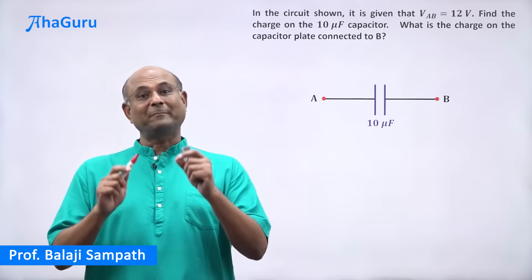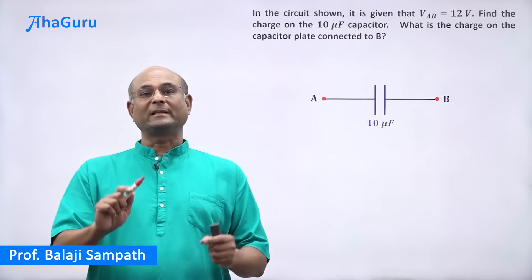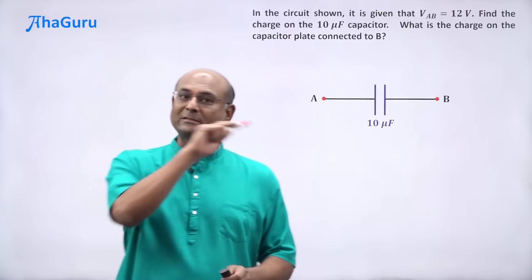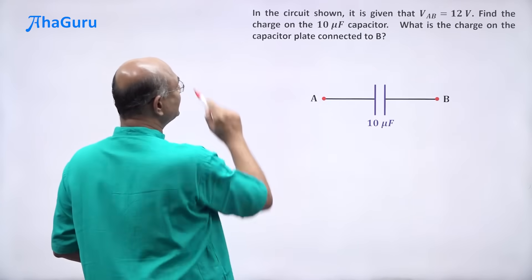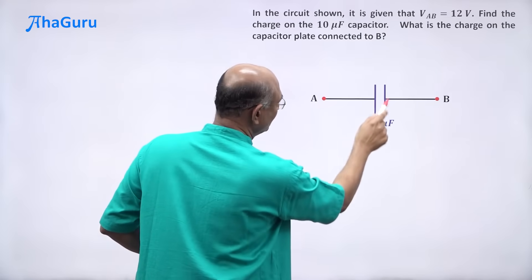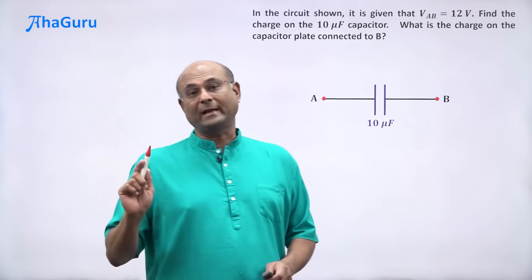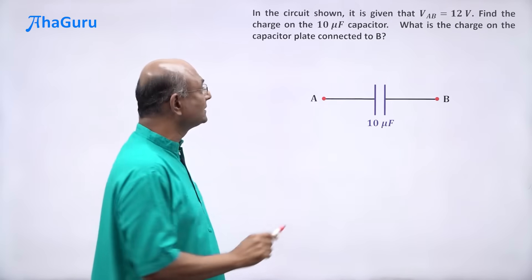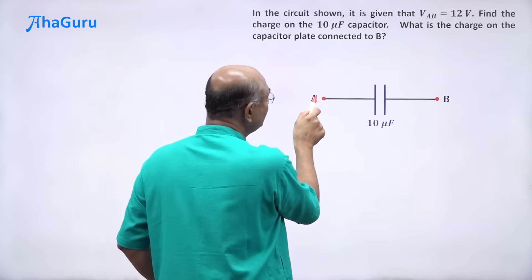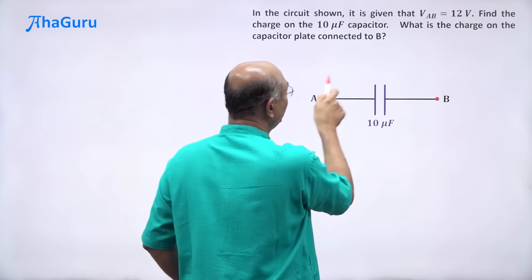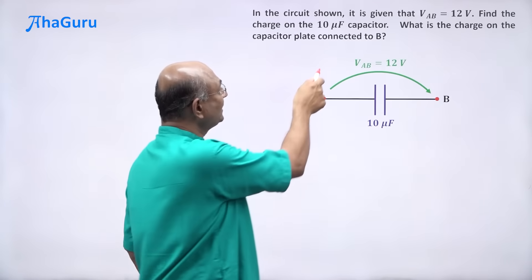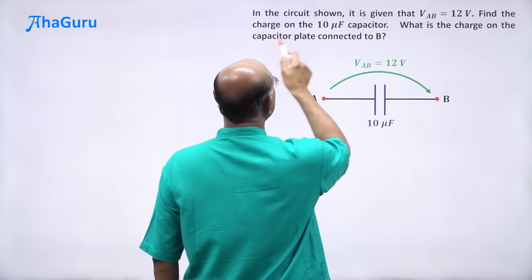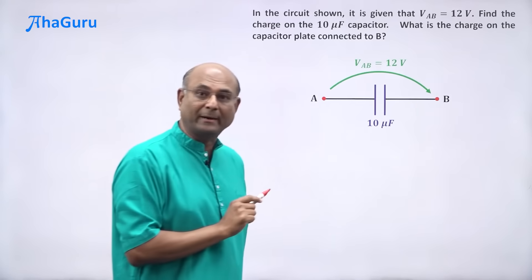This is a very simple question that can be done easily just by using the definition of the capacitance of a capacitor. In the circuit that is shown, there is a 10 microfarad capacitor. It is given that VAB is 12 volts. VAB is the potential drop from A to B, and it is given as 12 volts. Find the charge on the 10 microfarad capacitor.